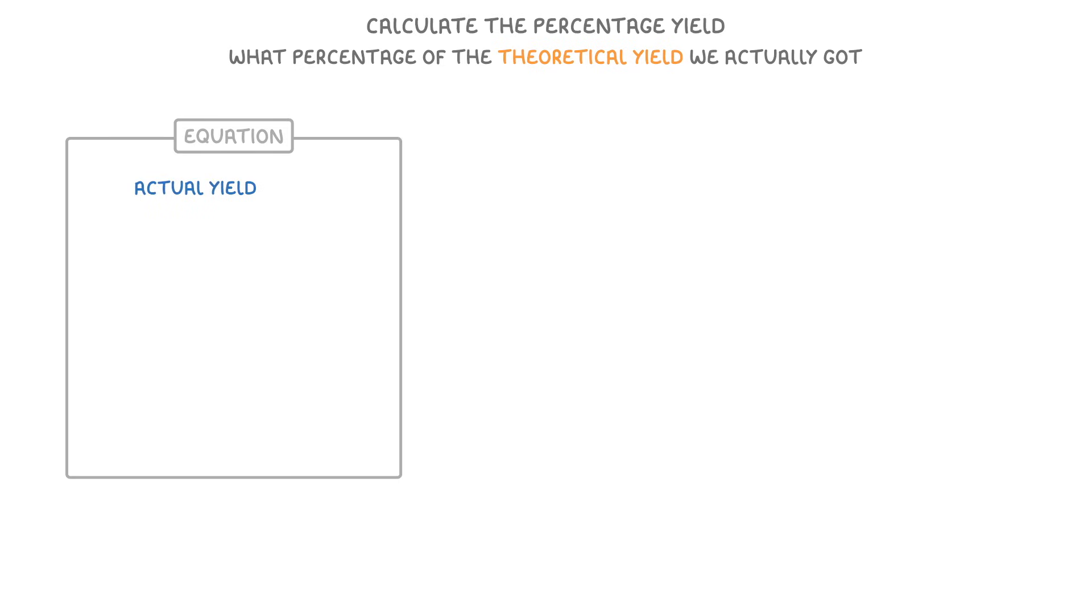The last thing we need to do is cover how to calculate the percentage yield, which tells us what percentage of the theoretical yield we actually got. To do this, we take the actual yield and divide it by the theoretical yield. And then we multiply it all by 100 to give us a percentage.